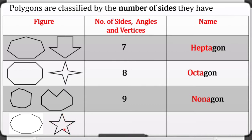And this one has ten sides, ten angles, and ten vertices — we call it a decagon. 'Deca' means ten. So what about an eleven-sided polygon and a twelve-sided polygon? A twelve-sided polygon is a dodecagon.